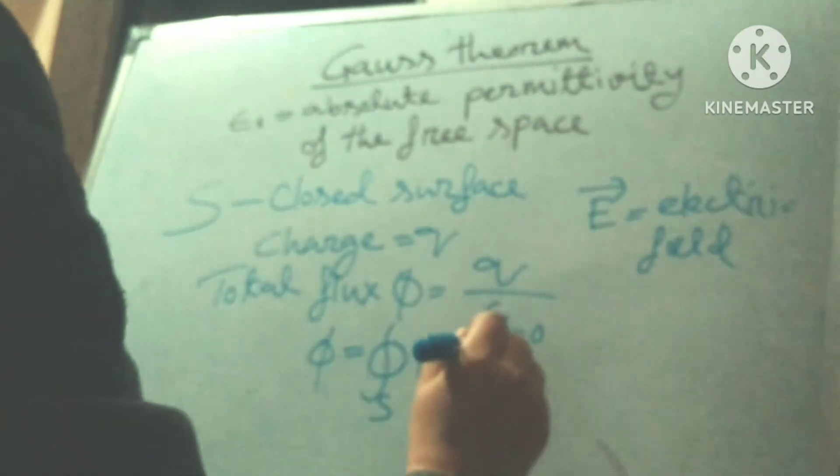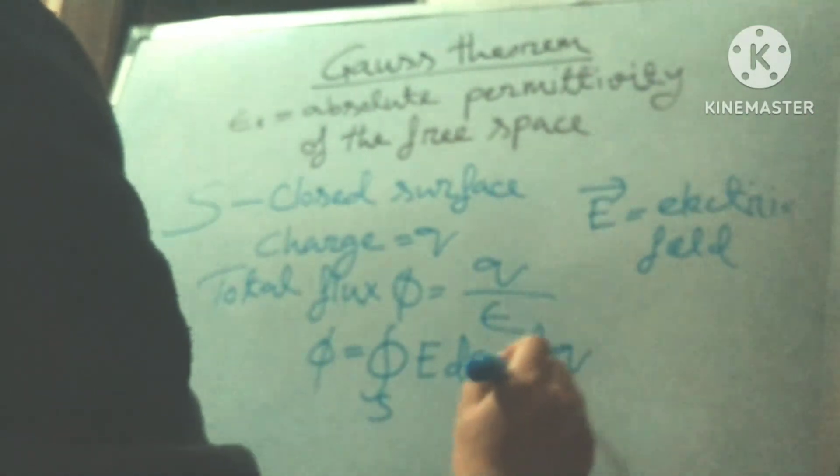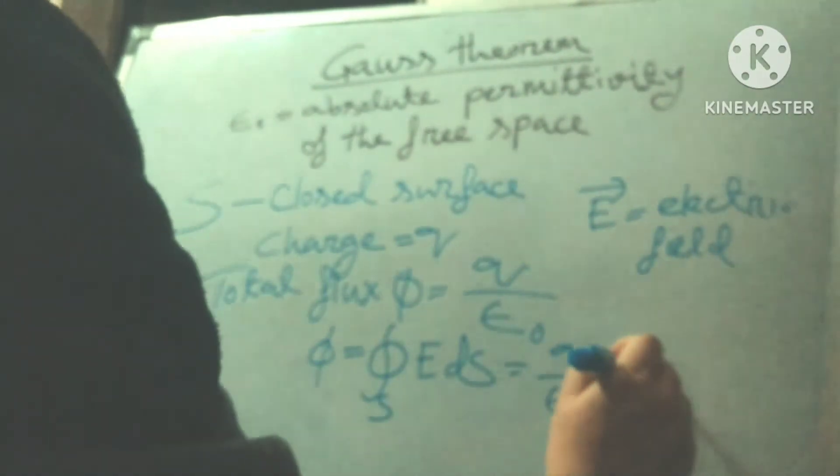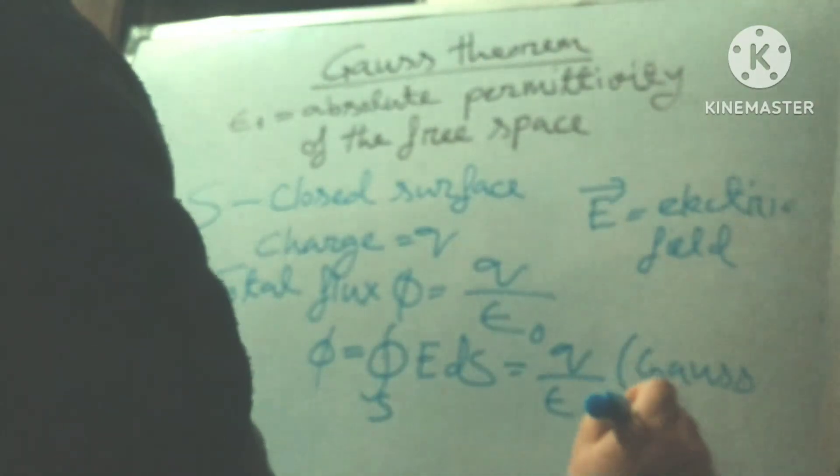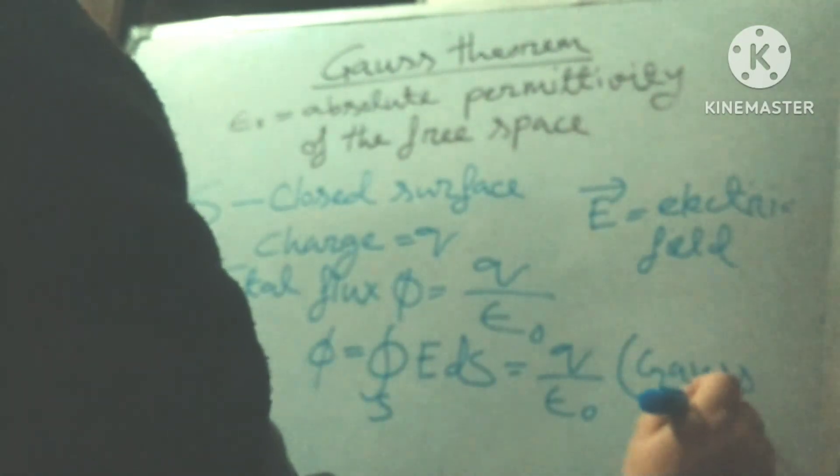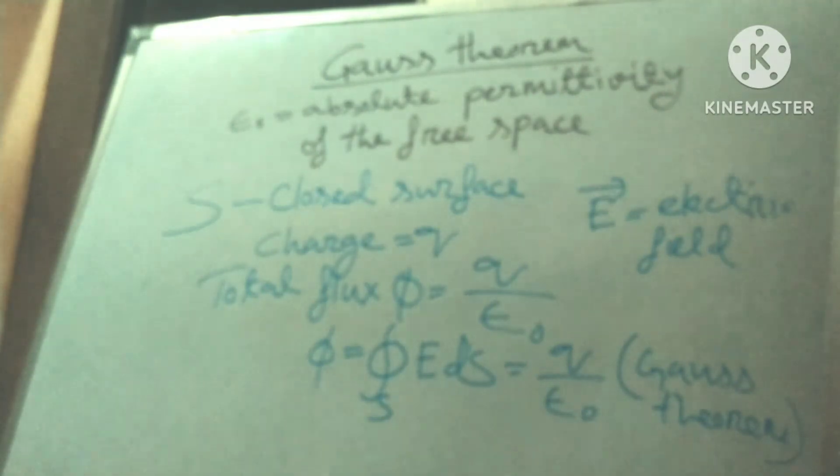So this equals to Q by epsilon 0, and this is called Gauss theory. This is called Q by epsilon 0. This is called Gauss theory.